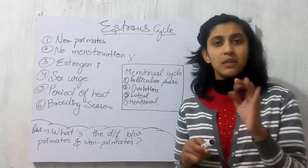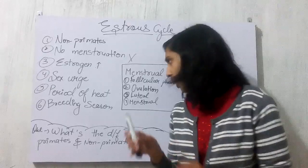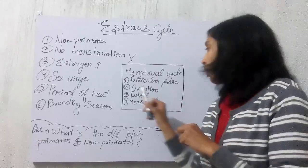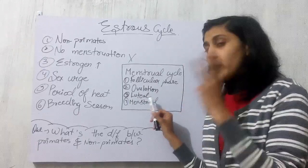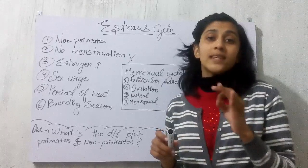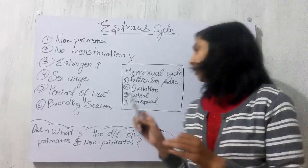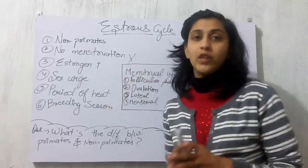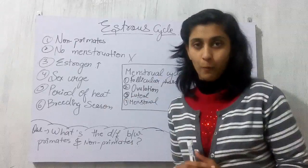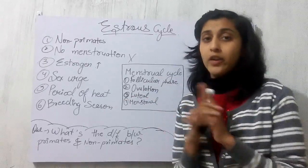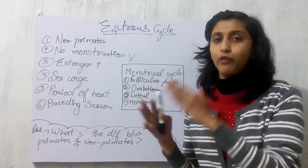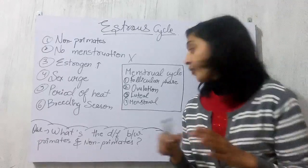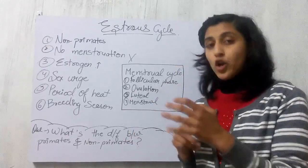In the menstrual cycle, there are four phases: follicular phase, ovulation, luteal phase, and menstrual phase. In the follicular phase, the follicles present inside the ovary are immature, and they will first get converted into mature form — the immature follicle will get converted into the Graafian follicle, or the mature follicle.